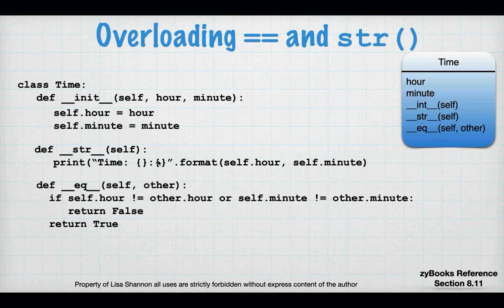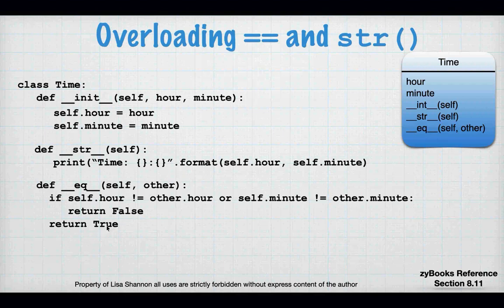When I overload the equal sign, I'm checking the variables against each other. `self` will be the object on the left-hand side, and `other` will be the object on the right-hand side. If all the variables are not the same, I'm going to return `False`; otherwise I return `True`. A double equal sign will only ever result in a `True` or a `False`, so I overload that operator and do the same thing in the way I want.